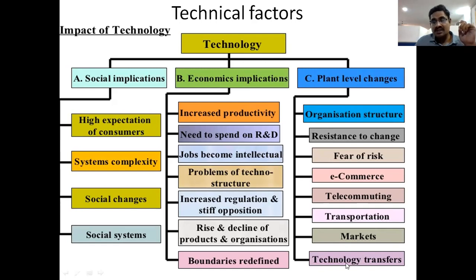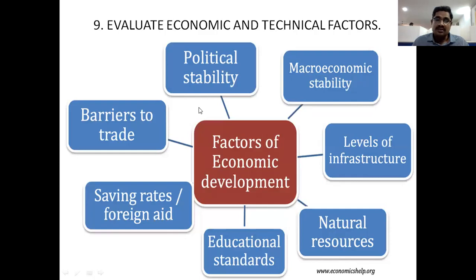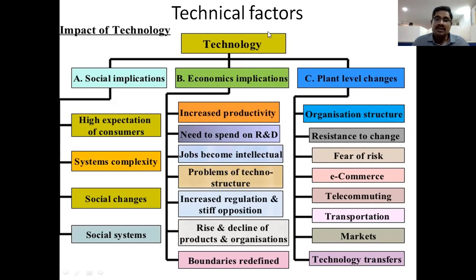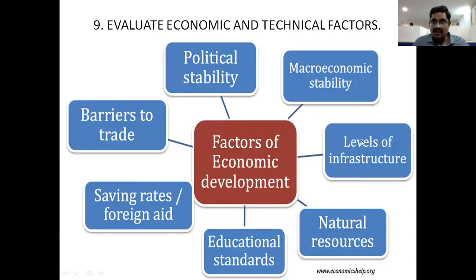Next, markets. And next, technology transfers. So these are the technical factors. And above, the economic factors — these are all economic factors used for development of the economy. From these three types — plant level benefits, economic/economies implications, and social implications — we can have the benefits from technology. These are the two factors for developing our financial positions or economic development of our organization.